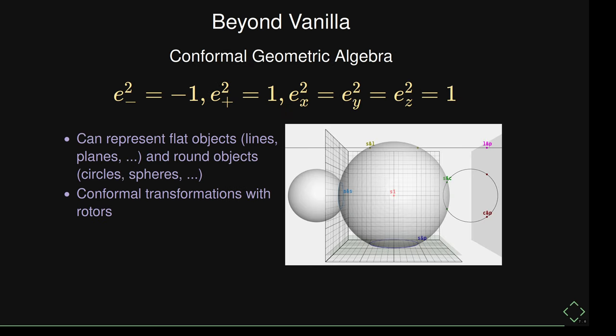Another algebra is Conformal Geometric Algebra (CGA). It has two extra basis vectors — one squaring to −1 and one to +1. It can represent flat objects like PGA, but also round objects: spheres and circles can be directly represented as elements. The transformations are conformal transformations — angle-preserving transformations. So if you're interested in conformal transformations, CGA is probably what you want to look at.